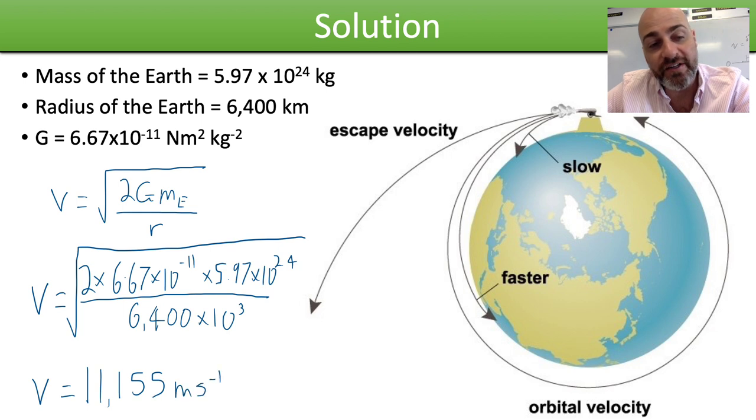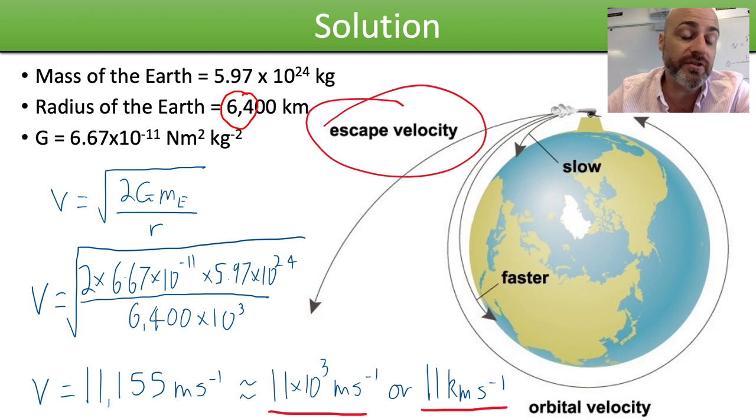This gives us a final answer of 11,155 metres plus a whole bunch of decimals. But since we used two significant figures as the minimum in the problem, you would really need to state your answer to the problem in two significant figures, which gives us 11,000 metres a second or 11 kilometres a second.